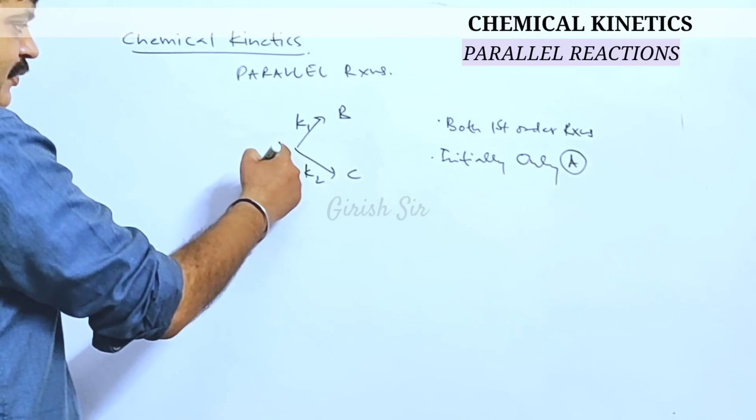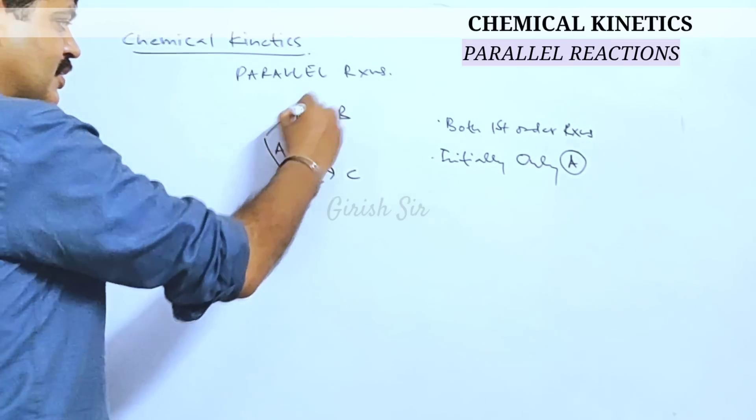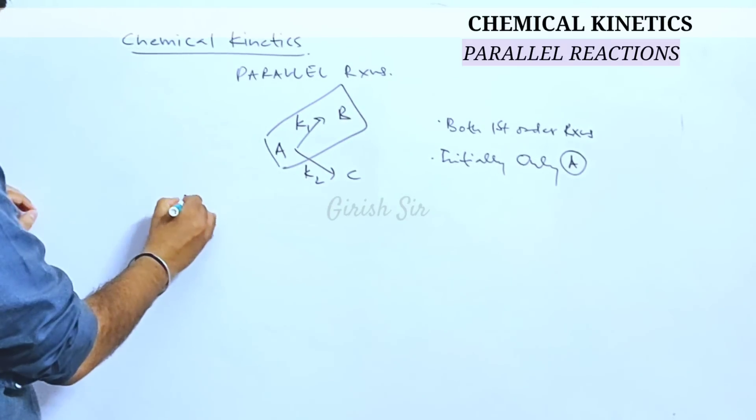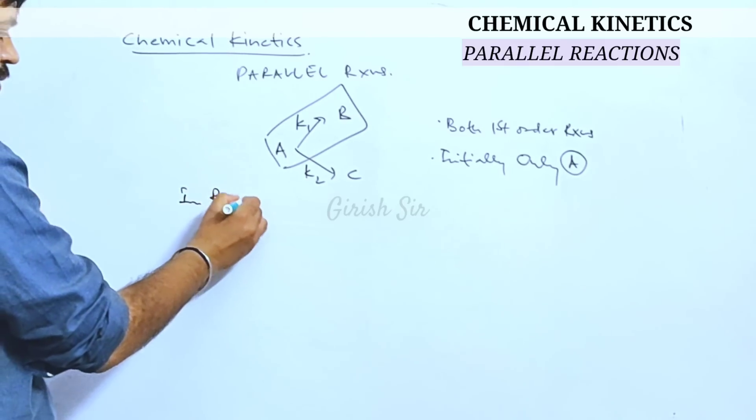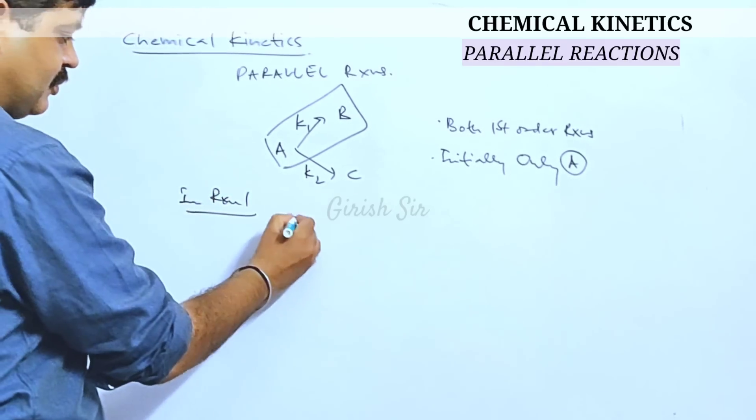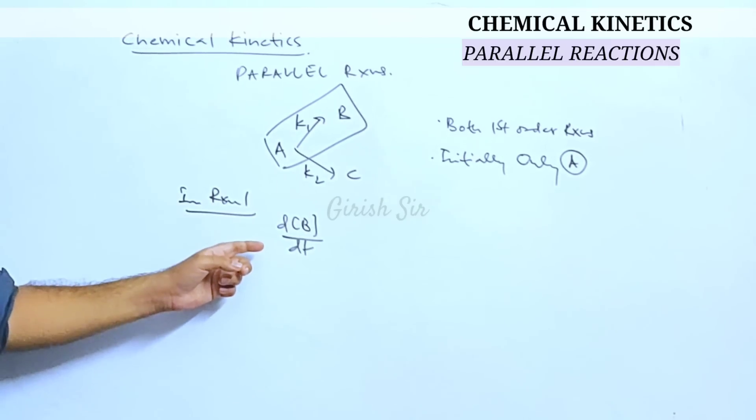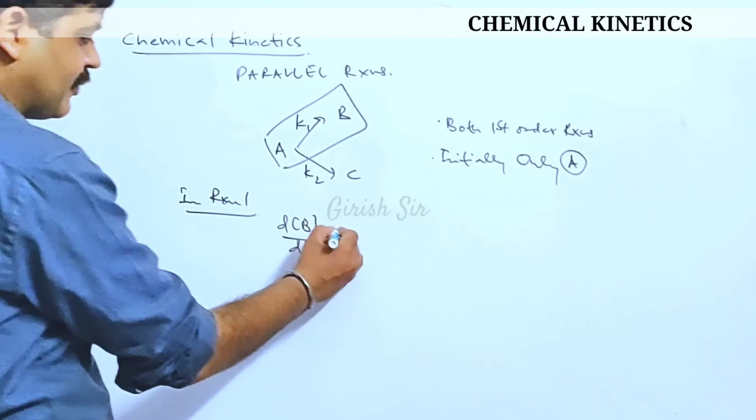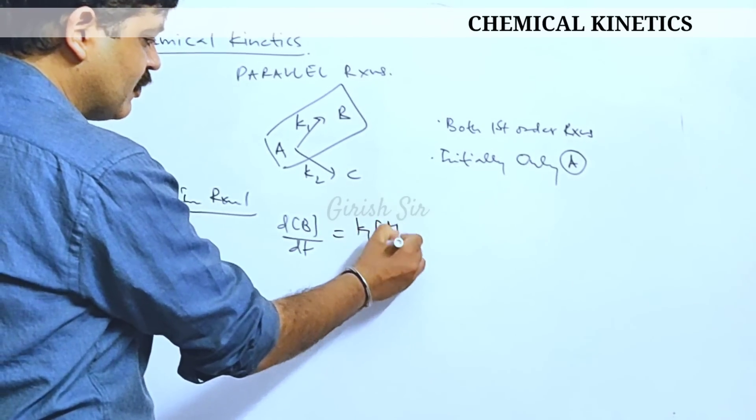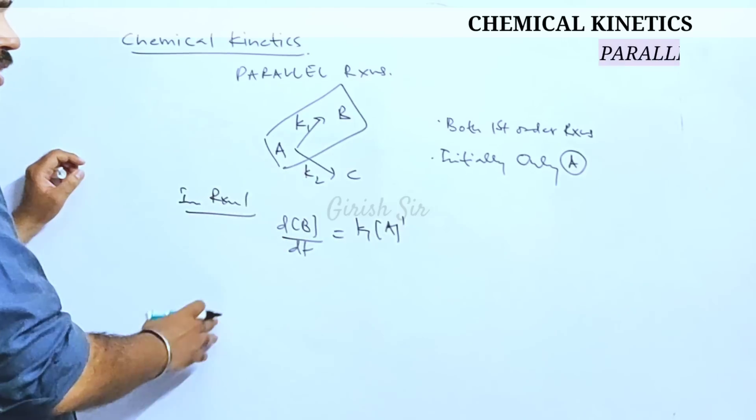So for reaction one, in reaction one A gets consumed and B is produced. In reaction one, dB/dt indicates rate of change of concentration of B that would be equal to K1 into A raised to 1 because it is a first order reaction given to us.